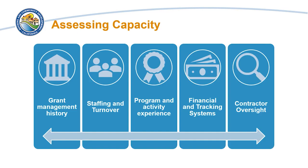Before selecting a subrecipient and entering into a subrecipient agreement, grantees should assess the capacity of these entities to implement and administer CDBG-CV funds. Capacity assessments should include a review of grant management history, staffing and turnover, program and activity experience, financial and tracking systems, as well as contractor oversight.